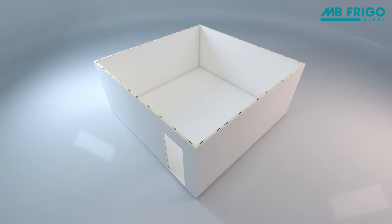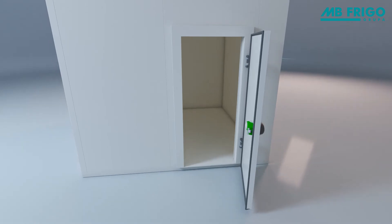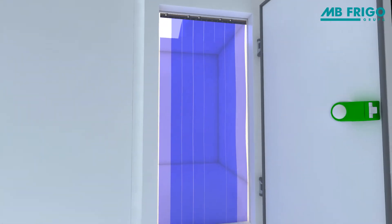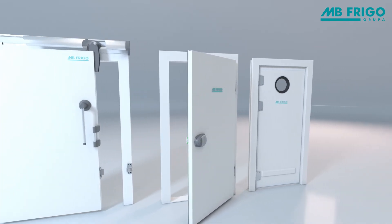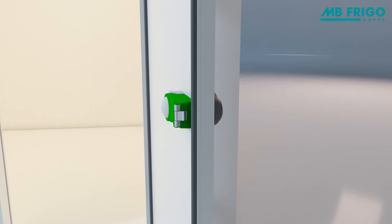Flawless panel connections prevent heat loss. MB Frigo refrigeration doors can be adjusted on all three axes. We can install doors in specific positions in the panels or provide you with loading doors whose position you determine on site.